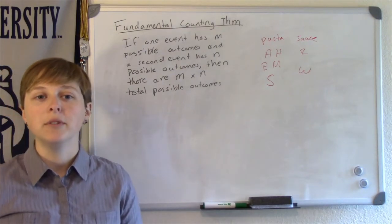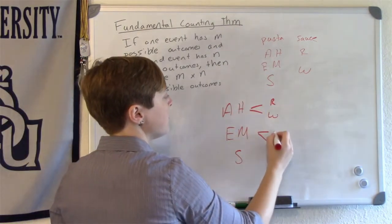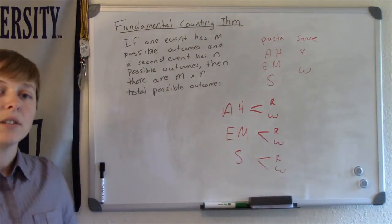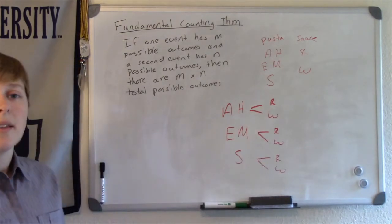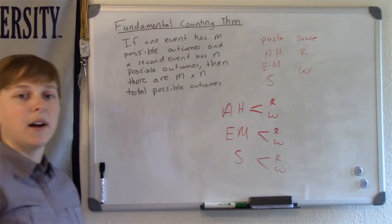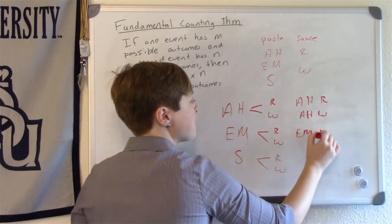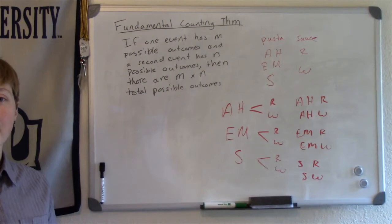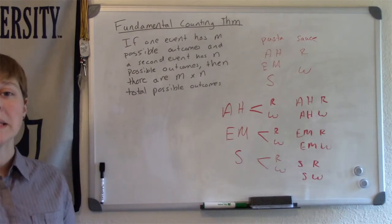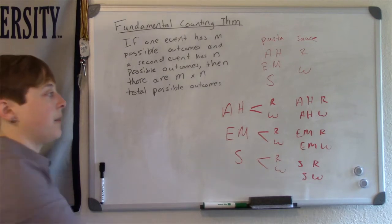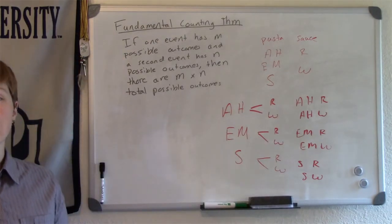A tree diagram might be helpful to illustrate all the different possibilities. Here, the first column refers to the type of pasta, and the second column refers to the type of sauce. Therefore, you can read off the branches of this tree to find all the different dinners. Notice that there are 3 times 2 equals 6 possible different dinners. Here, m is 3 and n is 2, so m times n is 6 possible outcomes.